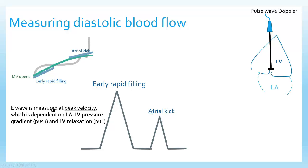The E wave is measured at peak velocity and is dependent on both push and pull. In health, it's the pull — left ventricular relaxation is the predominant force, accounting for most of your E velocity. The left ventricle rapidly relaxes and opens, the left atrium rapidly empties, and you get a big gush of blood flow. Your E velocity is higher in health and more dependent on the pull. As we talk about diastolic dysfunction, you'll see that the left atrial to left ventricular pressure gradient — the push — is what ends up accounting for most of the E velocity.